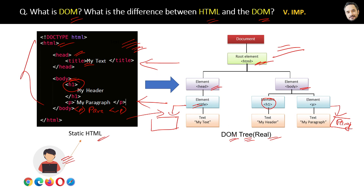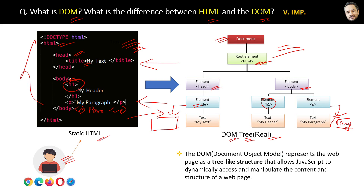You can also say that the DOM is like an interface to make your website dynamic with the help of JavaScript. The proper definition of the DOM — which stands for Document Object Model — is that it represents the web page as a tree-like structure that allows JavaScript to dynamically access and manipulate the content and structure of a web page.